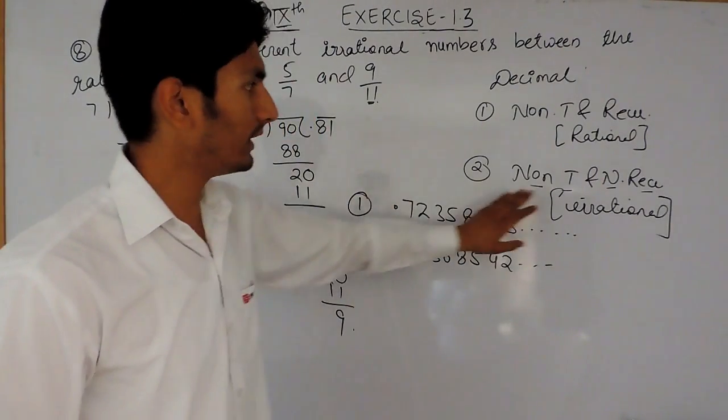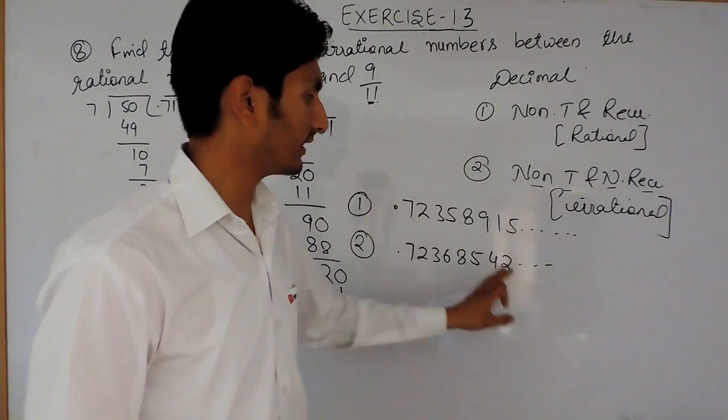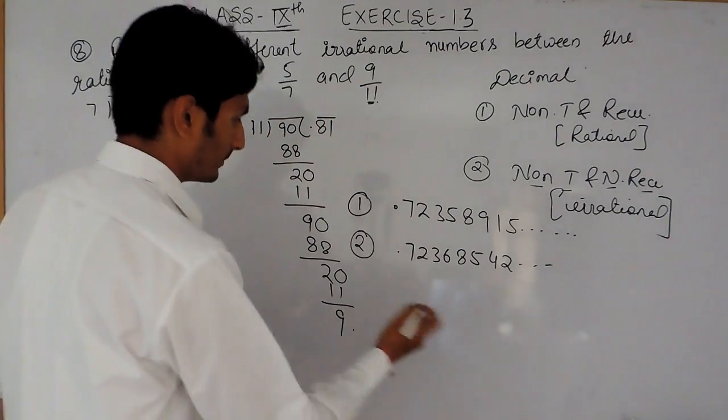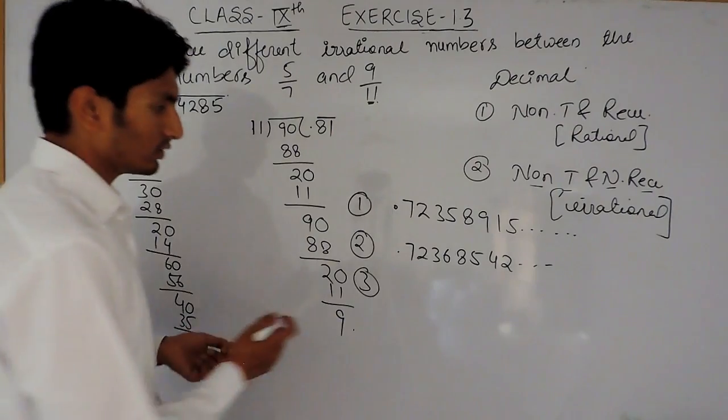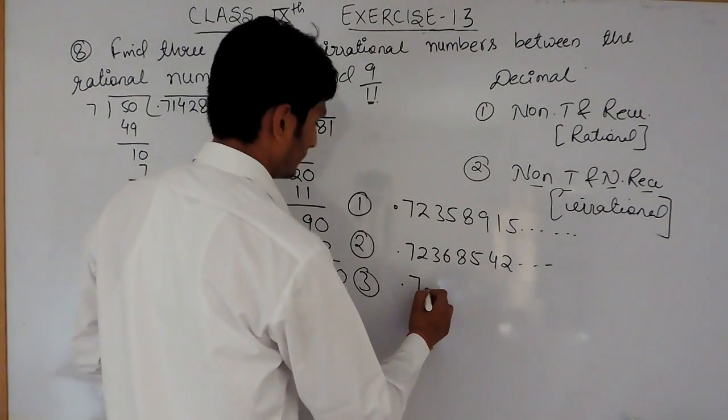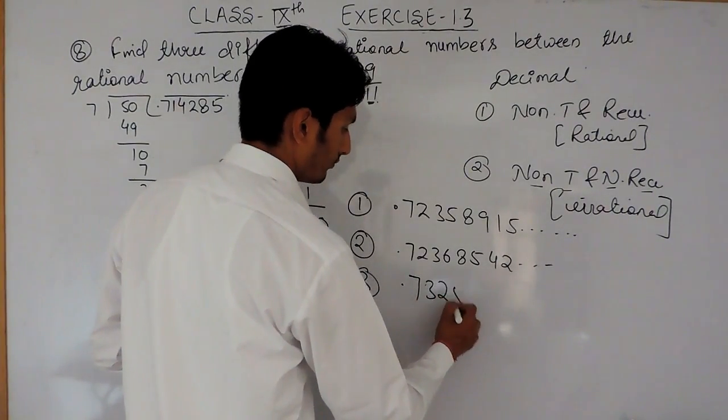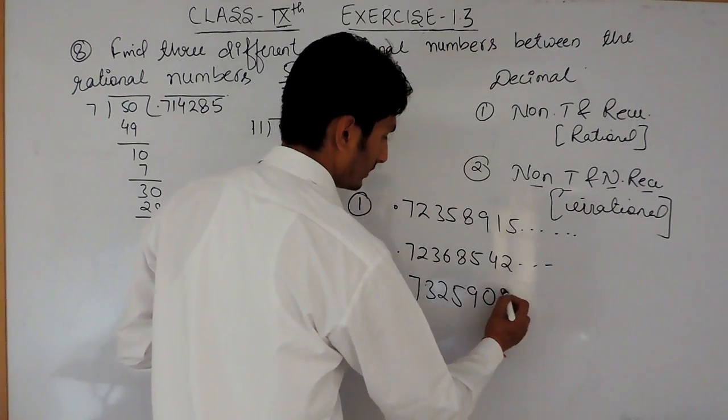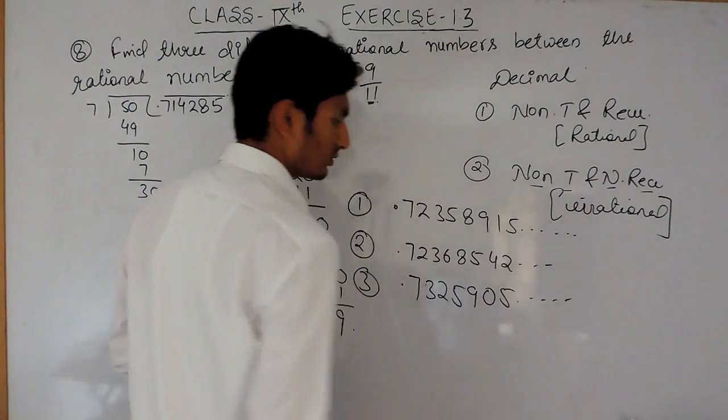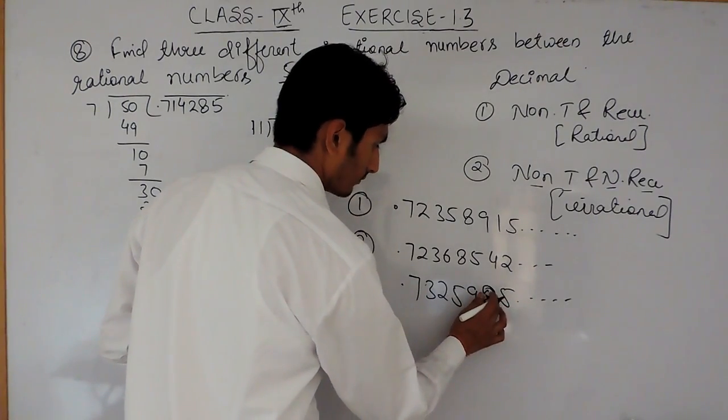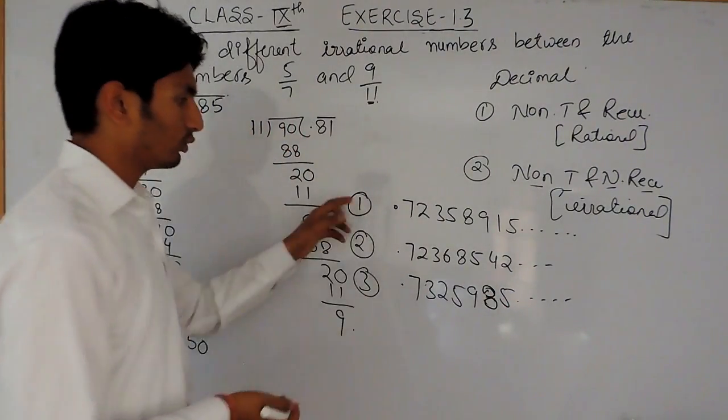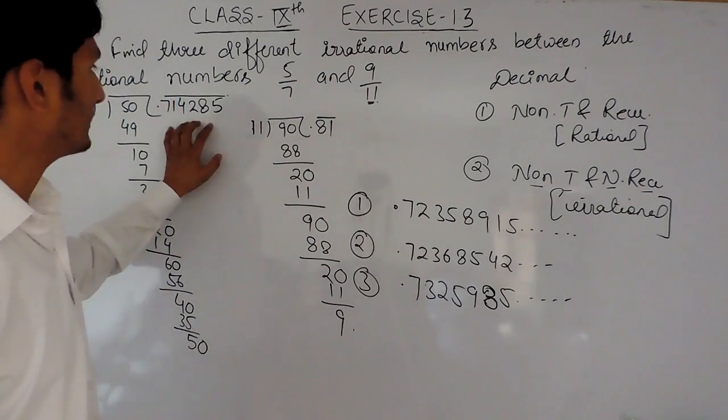For an irrational number, the number should be non-terminating and non-recurring. So you can insert any number. It should be between 7 and 8, so it could be 7.325903 and so on. So these would be the 3 irrational numbers between this and this.